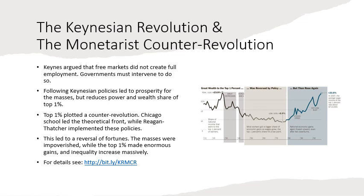So the top 1% plotted the counter-revolution. When I was studying in the 1970s, the Chicago school was considered a school of crackpots — they did not do serious economics, they were ideologues. But now the opposite is true: Keynesians are considered crackpots and the Chicago school is firmly dominant throughout the profession. There was a coup engineered against Keynesian economics, and this had the desired effect — the share of the top 1% started to rise and is at very high levels today, with less than 50 people owning half the wealth of the planet.